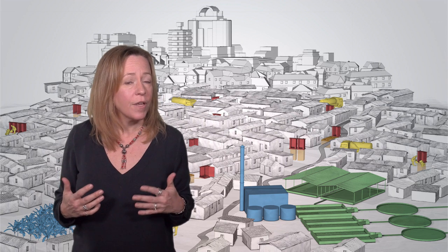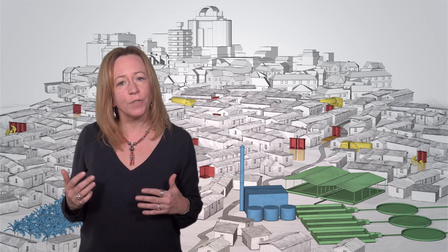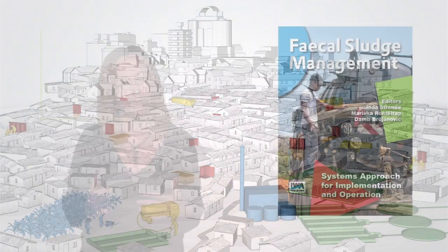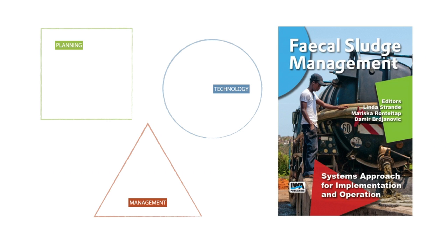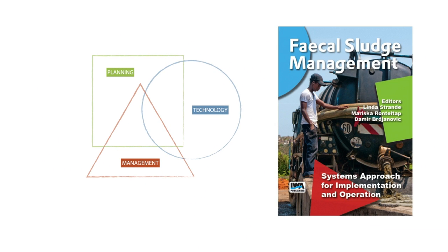In the following modules, we will present examples of solutions that are being implemented. One of the most important things to realize is that fecal sludge management is not only about technology — it's about a complex service chain that depends on interactions among people at every step. The way forward to finding sustainable future solutions for fecal sludge management includes overcoming bottlenecks at the crossroads of planning, management, and technology, all of which you will hear about in future modules.